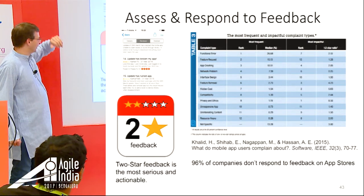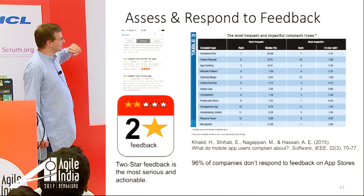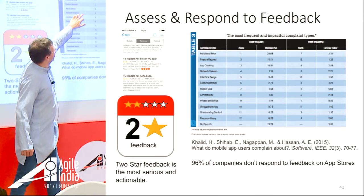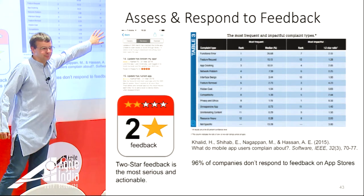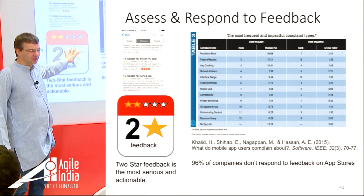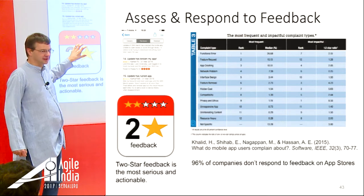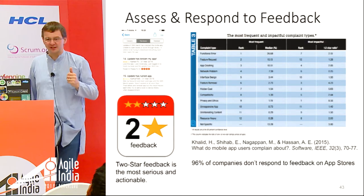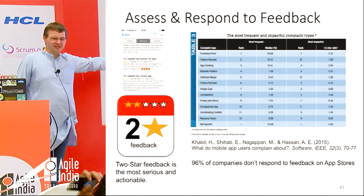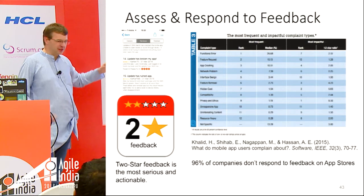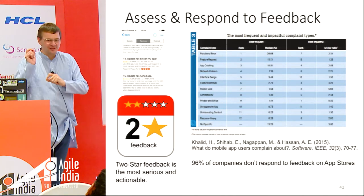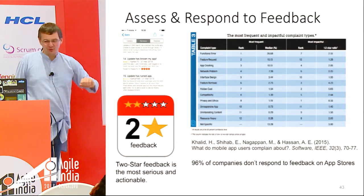Academic research from Spotify and academics mined app feedback and categorized it. Functional errors were the top-ranking issue. What they noticed is that two-star feedback had the most important information. It's easy to go one-star or five-star — 'hate the app, uninstall' or 'love the app.' But somebody who provides two stars has thought about it, and the comment is typically insightful: 'I did this, this happened, this is what happened next, I wish you'd fix this.'